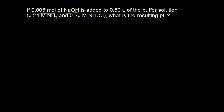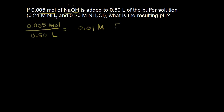We've added 0.005 moles of strong base to our buffer solution, and the total volume is 0.50 liters. We're adding 0.005 moles of sodium hydroxide. Dividing moles by liters: 0.005 divided by 0.50 gives 0.01 molar — that's our concentration of sodium hydroxide, and also our concentration of hydroxide ions in solution.